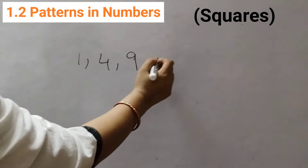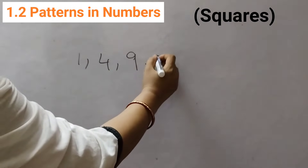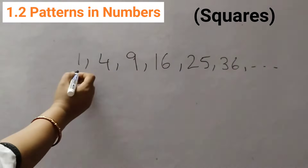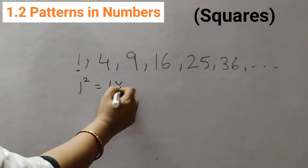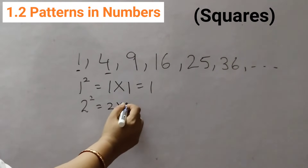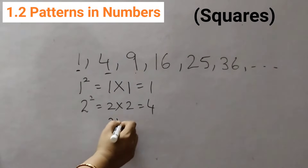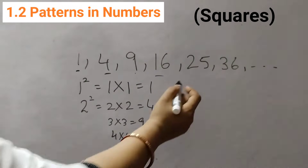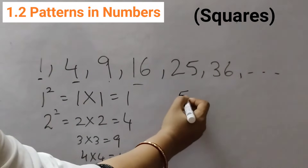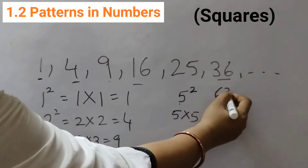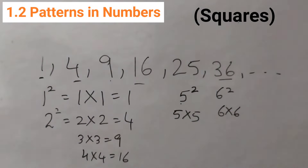Next we have square numbers: 1, 4, 9, 16, 25, 36 and so on. Square numbers — the first one is 1 squared, that means 1×1=1. The second is 2 squared: 2×2=4. 9 is 3 squared: 3×3=9. 16 is 4 squared. 25 is 5 squared: 5×5=25. 36 is 6 squared: 6×6=36. So these numbers are called square numbers or perfect squares.